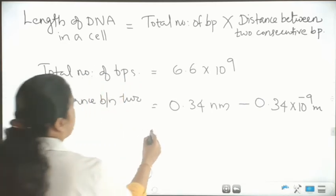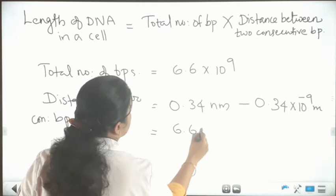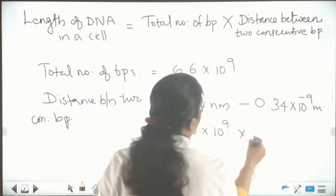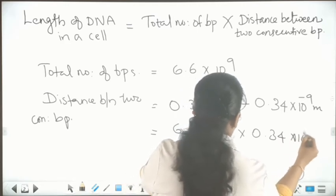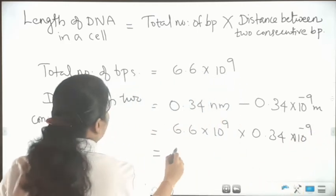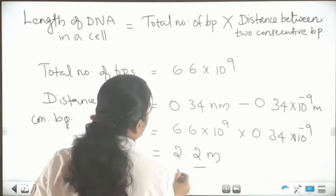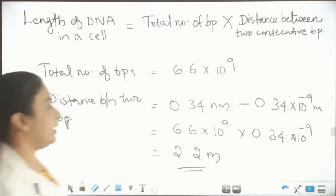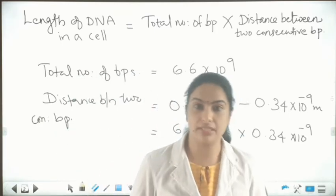Now we can calculate this: 6.6 into 10 raised to 9, into 0.34 into 10 raised to minus 9, gives us 2.2 meter. So this is the length of the DNA in a cell — 2.2 meter.